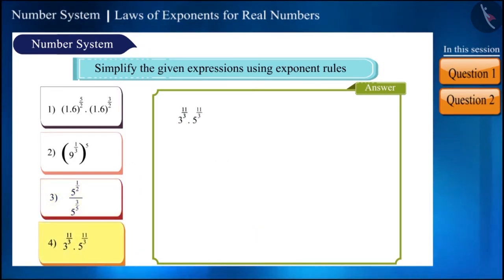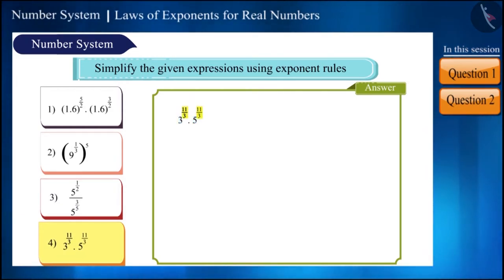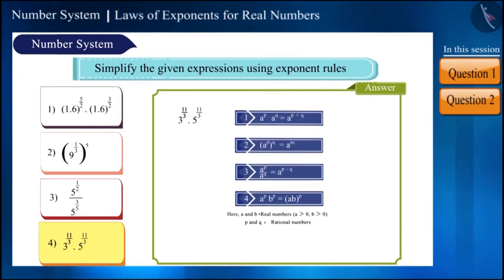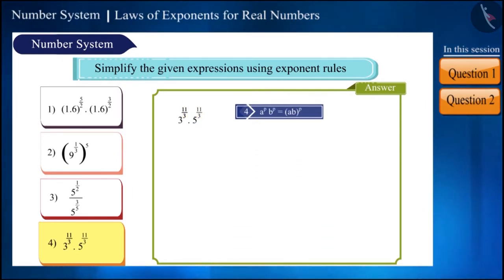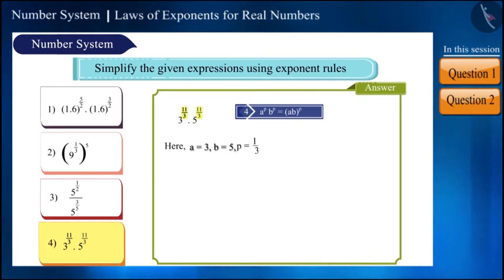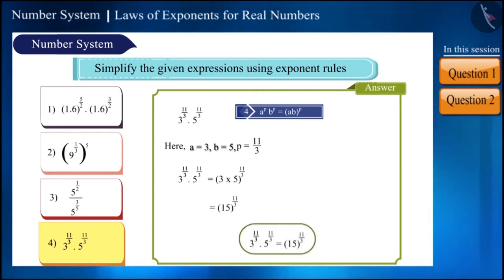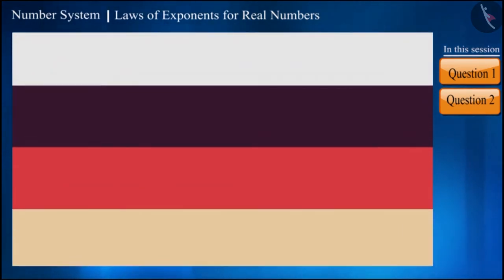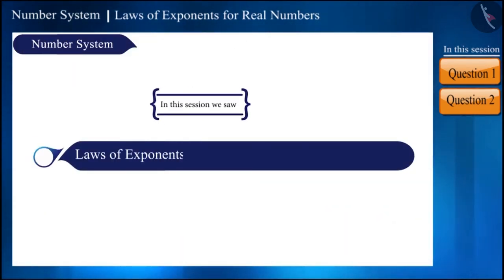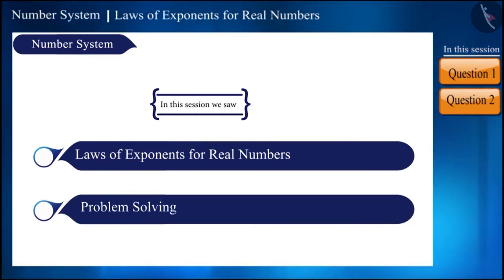In the last one, the bases are different but the exponents are the same. We use the rule where a = 3, b = 5, and p = 11/3. We get 3 multiplied by 5, raised to the power 11/3, which can also be written as 15 raised to the power 11/3. That's all for this session — today we solved some questions on the laws of exponents for real numbers.